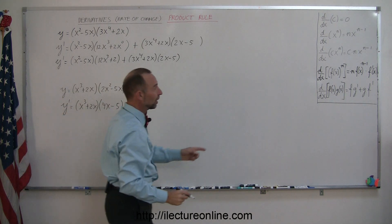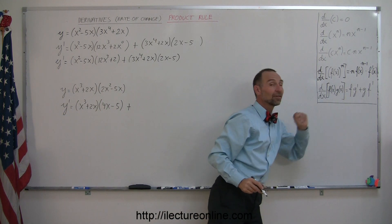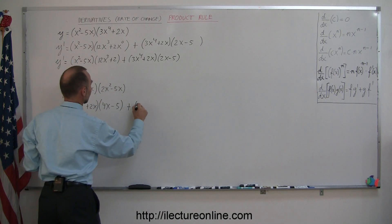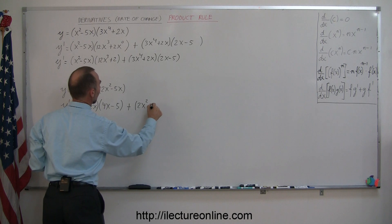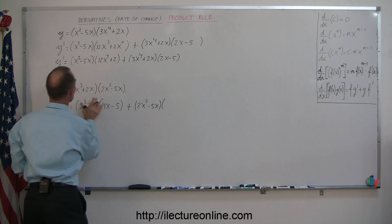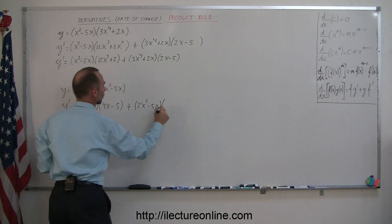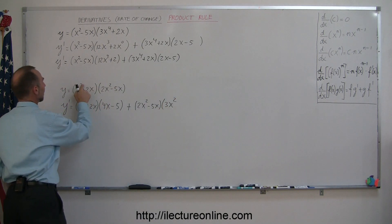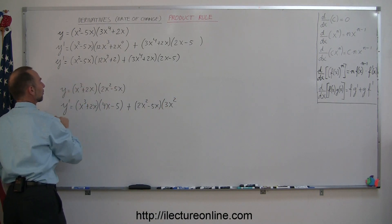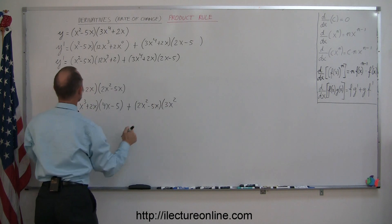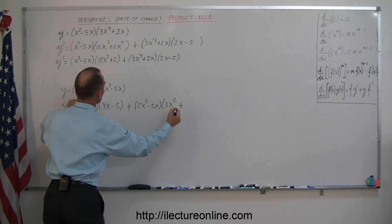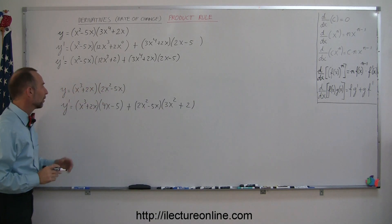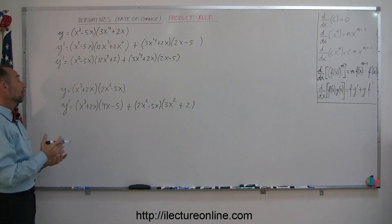Then we still have to do the second part: plus the second function times the derivative of the first. So we take the second function, which is 2x squared minus 5x, times the derivative of the first function here, which is 3x squared. Remember — take the exponent, bring it to the front, subtract 1 from the exponent, so that is 3x to the second power, and then the derivative of 2x is simply plus 2. And there you have the derivative of our product of two functions.